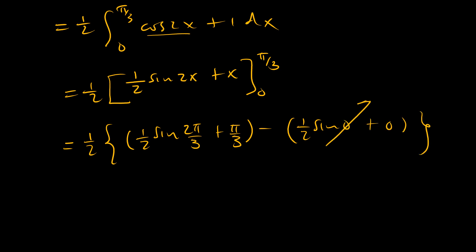So this entire part goes to 0. And so we are left with a half of sine of 120 degrees or 2 pi over 3, which is square root of 3 over 2, plus pi over 3.